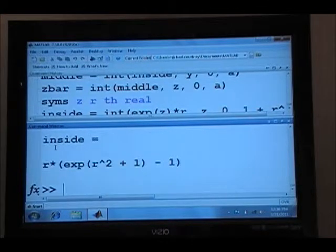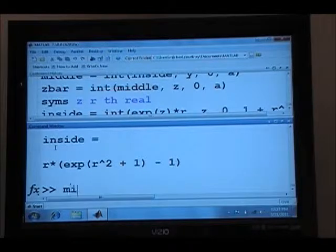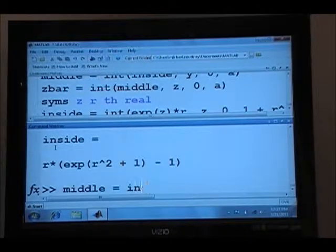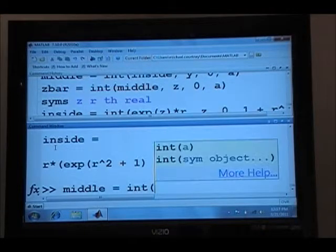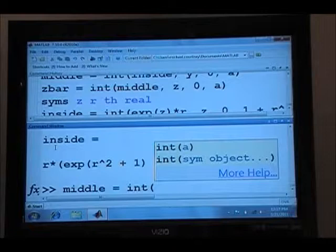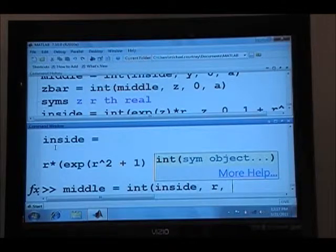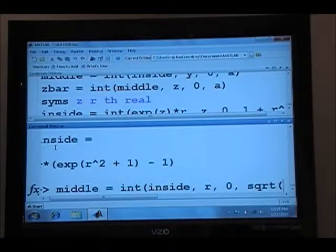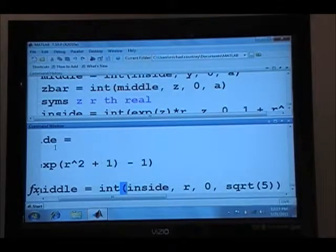And we'll think about that for a minute. And then it comes up with the expression. And then the middle integral is equal to the integral over the variable. Well, the integrand is the inside integral. The variable is r and we're going from zero to the square root of five.